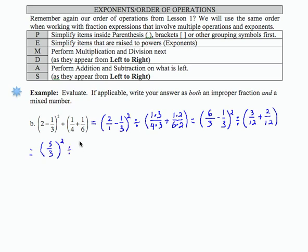Divided by, I have 3 twelfths plus 2 twelfths, which is 5 twelfths. So again, order of operations tells us to do exponents before division. So 5 thirds squared is 5 thirds times 5 thirds, which is 25 over 9.